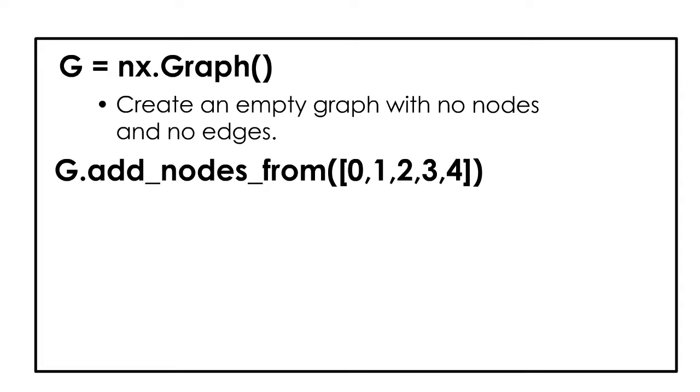G dot add underscore nodes underscore from zero, one, two, three, four. Draw a list of nodes in the graph. That is node 0, node 1, node 2, node 3, and node 4.